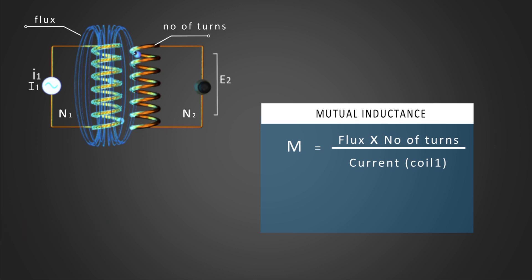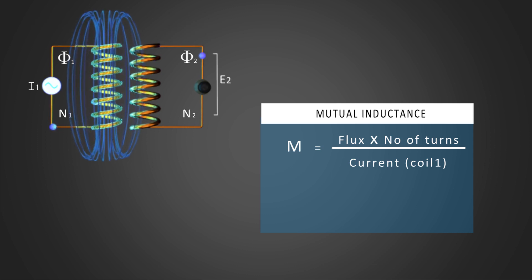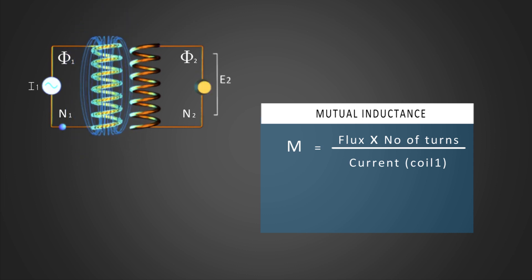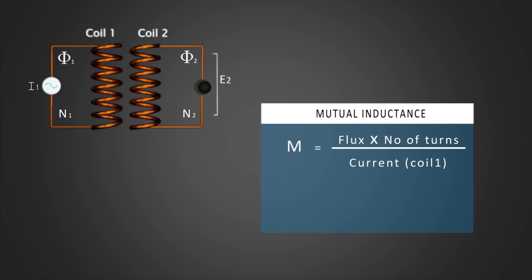If the flux in coil one is phi1, then the flux linking with coil two is noted as phi2. N2 is the number of turns of coil two. Let's say current i1 flows in coil one, then M = N2 × phi2 / i1.